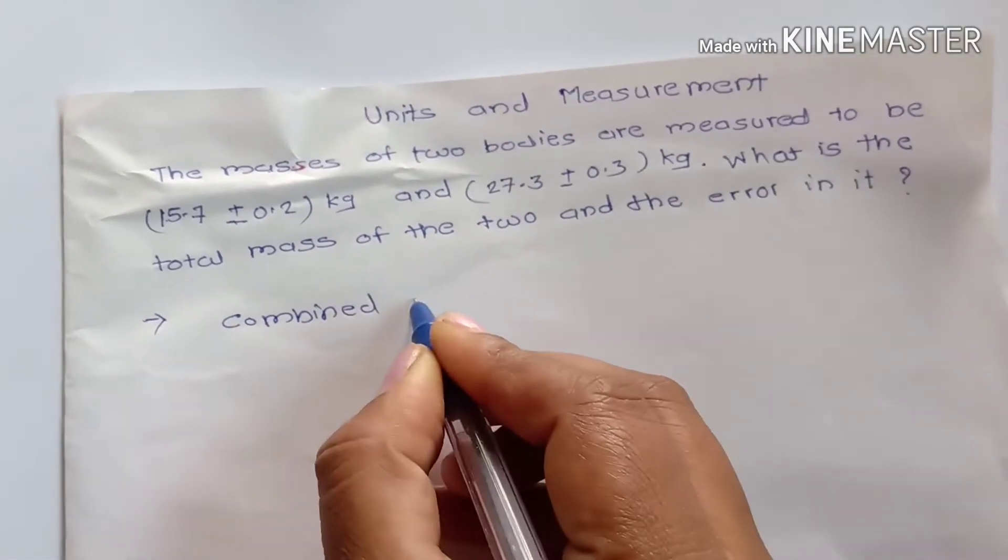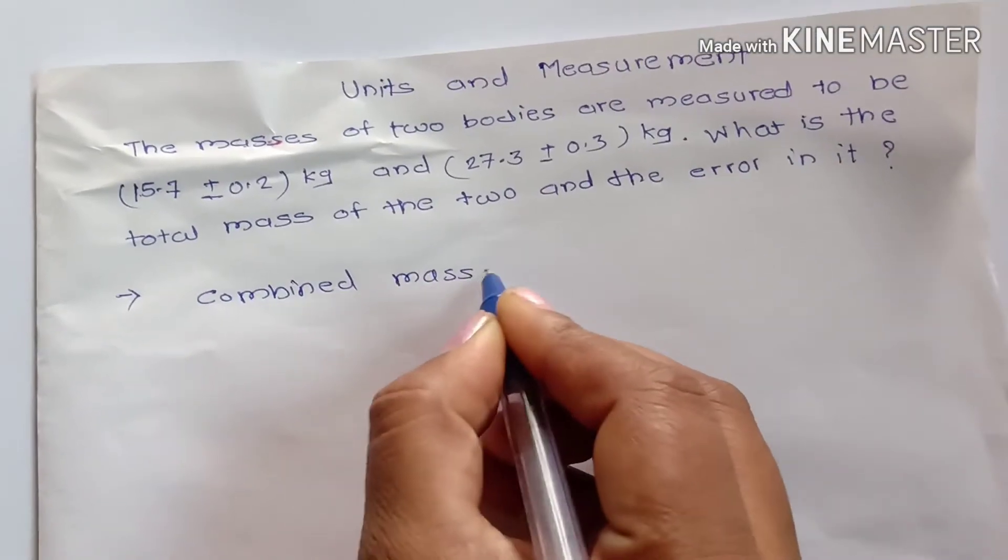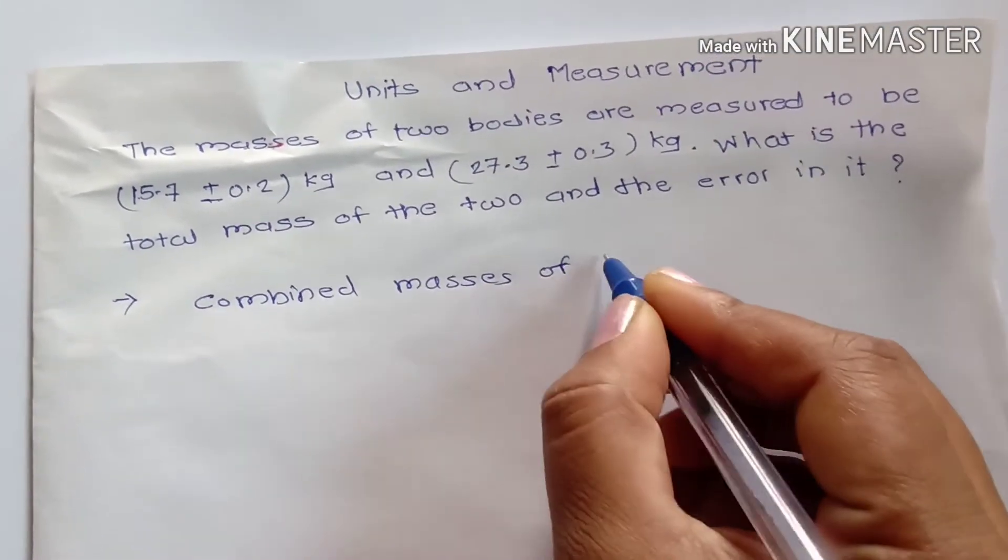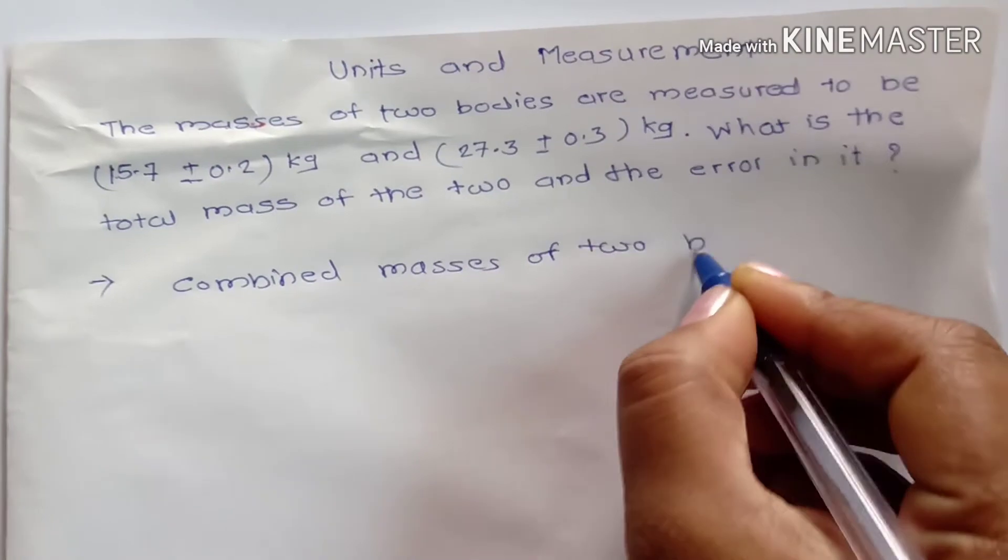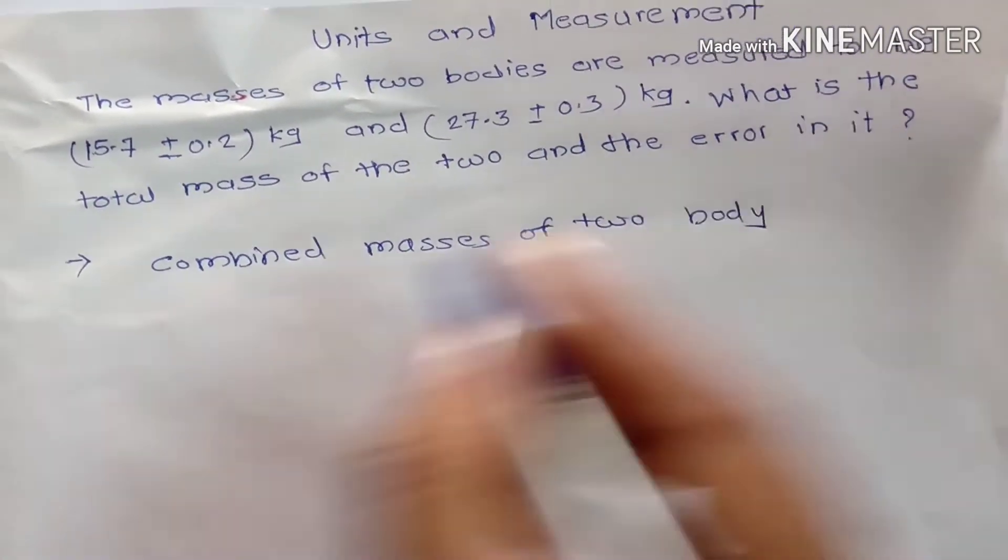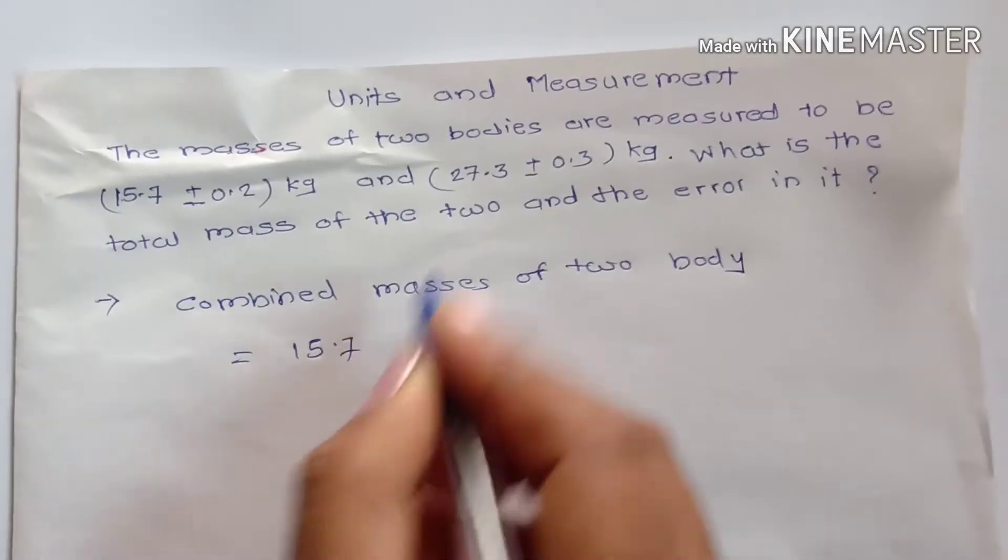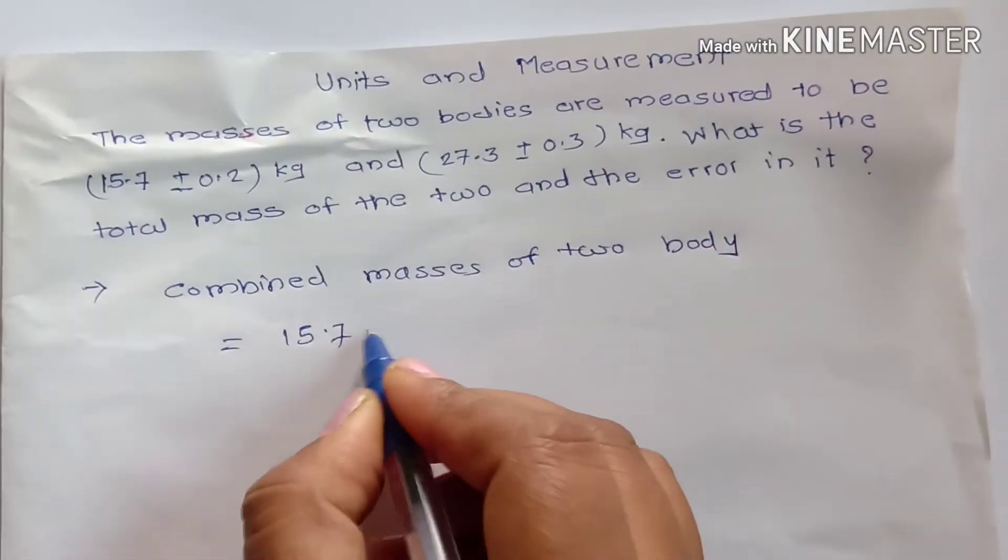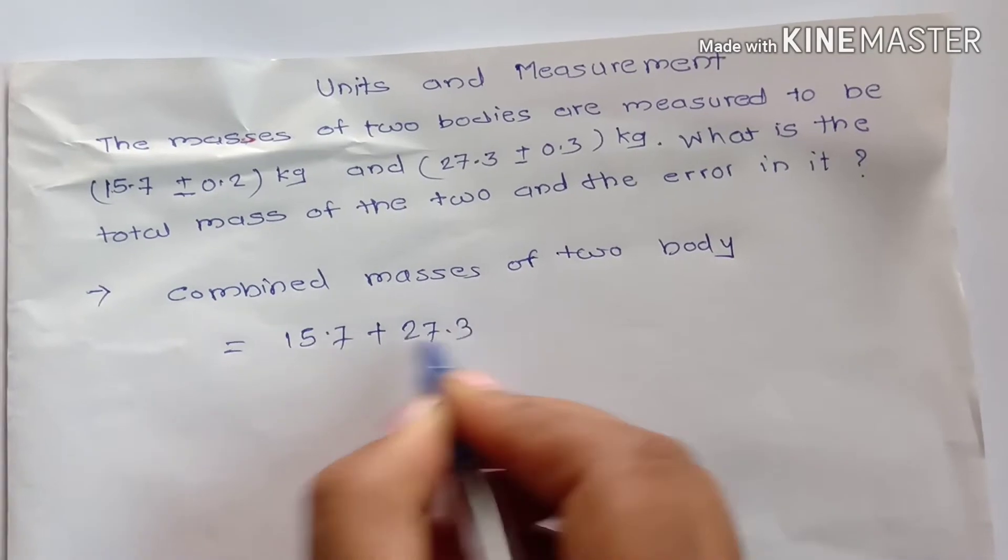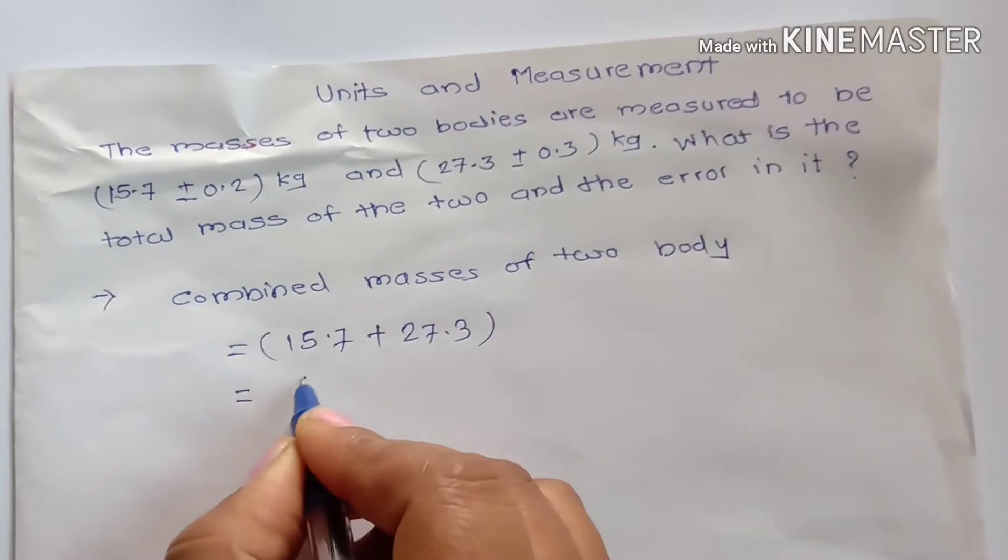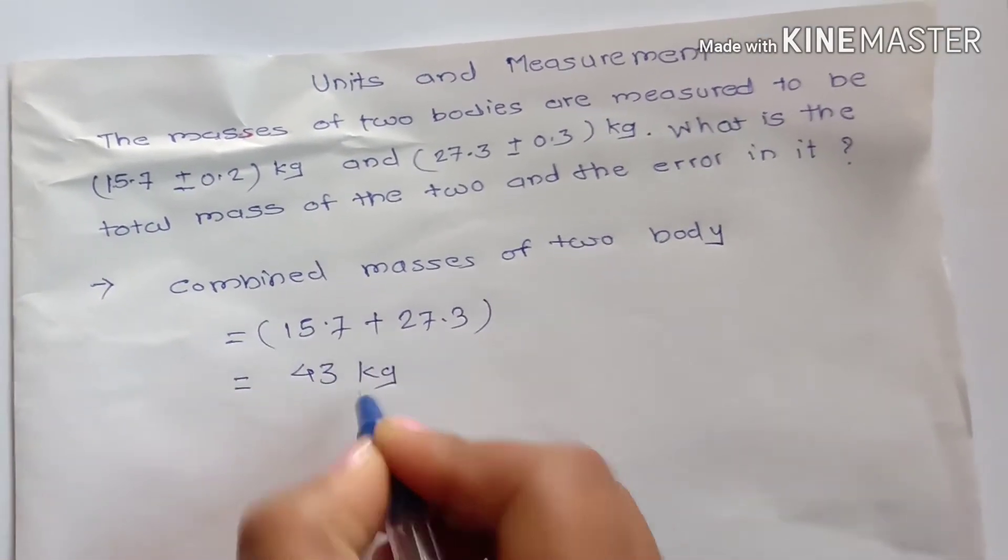The combined masses of two bodies is equal to first mass of this body is 15.7 and second is 27.3. Addition of these two quantities and their answer is 43 kg. This is the combined mass of the two bodies.